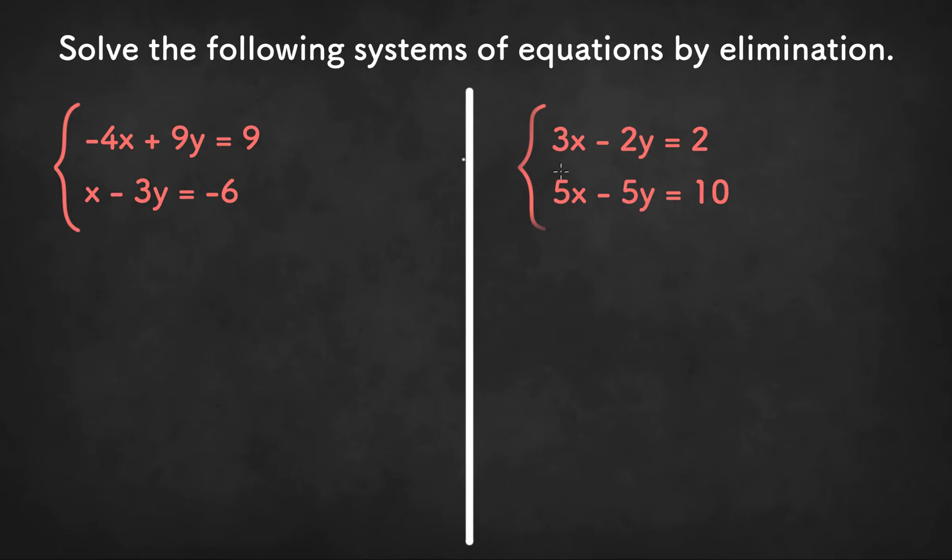So in these next two examples, we don't have variables with opposite or identical coefficients, so we need to multiply one or both of the equations so that we do have an opposite or identical pair of coefficients.